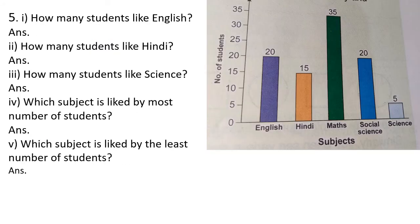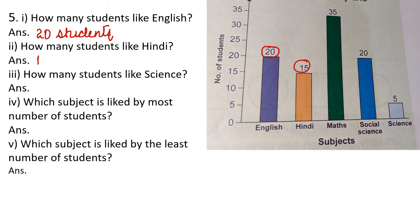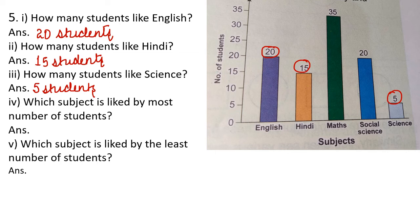In the next graph, number of students and subjects are given. This graph tells us how many students like which subject. How many students like English? The bar for English is up to 20, so 20 students. How many like Hindi? The bar is at 15, so 15 students. How many like Science? There are 5 students in Science. Which subject is liked by most students? The highest bar is for Maths with 35 students. Which subject is liked by least students? The shortest bar is for Science, so the answer is Science.